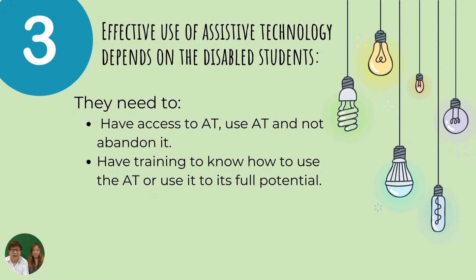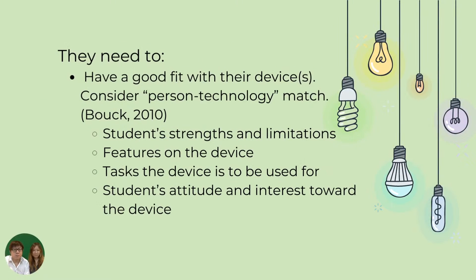What can you do to ensure inclusion? Students will also need to have access to AT, use the AT and not abandon it. They also need training to know how to use AT to its full potential. Have a good fit with the devices. Consider a personal technology badge. Also consider the student's strengths and limitations, features on the device, the tasks that the device is to be used for, and the student's attitude and interest towards the device.